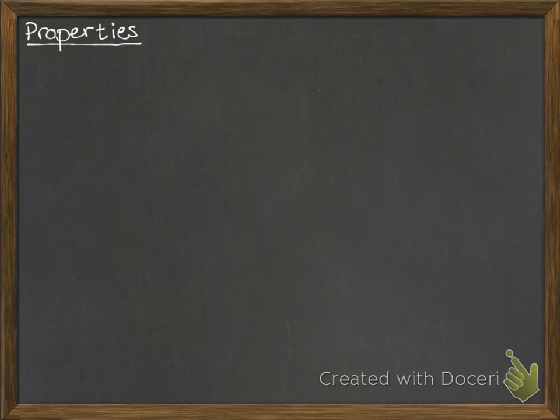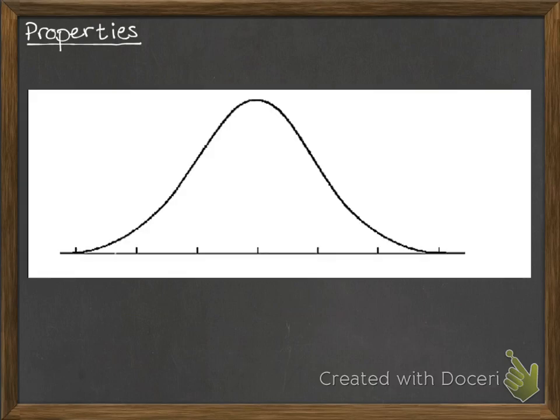Now, the properties of a normal distribution. We have something like this, a nicely drawn normal curve for us, where the mean is right there in the middle. That's referred to as mu. That's a Greek letter, and it's always used to refer to the mean.